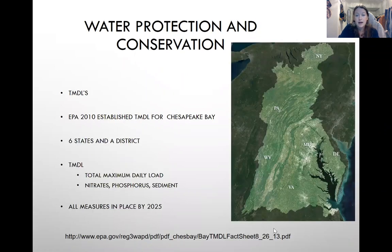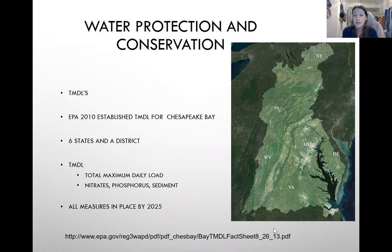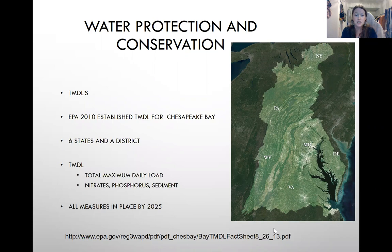It's really important that you know TMDLs — the Total Maximum Daily Load. That is measuring nitrates, phosphorus, and sediment. It is established by the EPA for the Chesapeake Bay, which involves six states and a district: Delaware, Maryland, Virginia, West Virginia, Pennsylvania, New York, and the District of Columbia. All these measures have a goal to be in place by 2025.